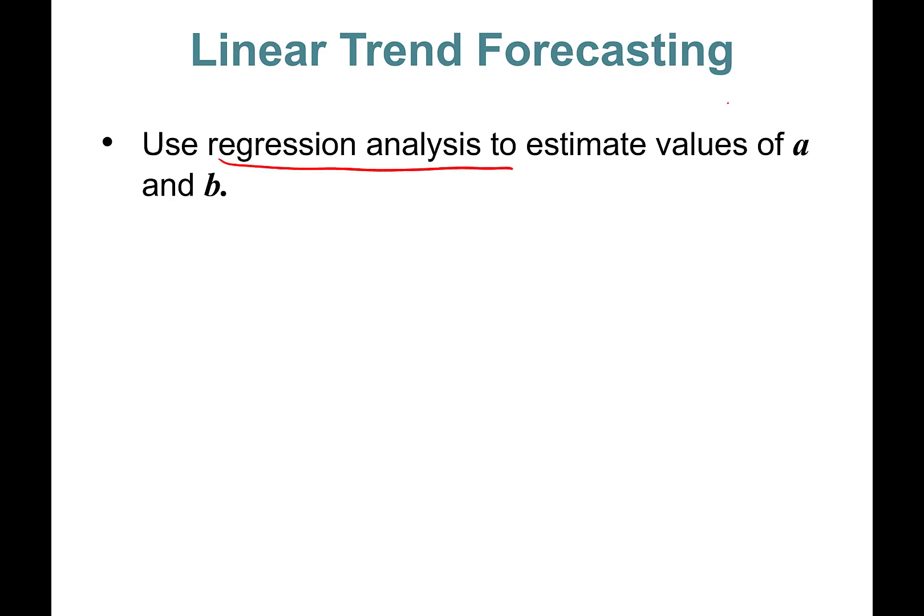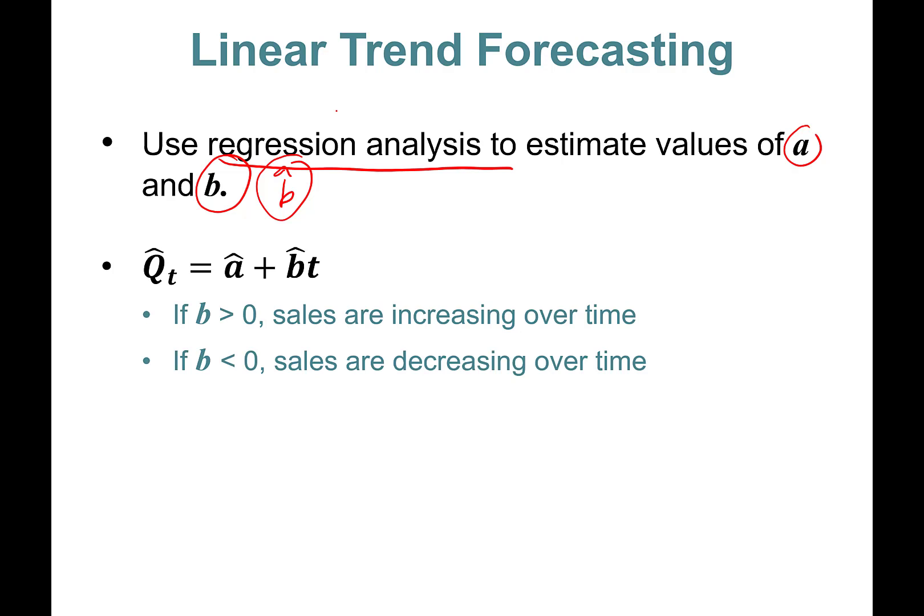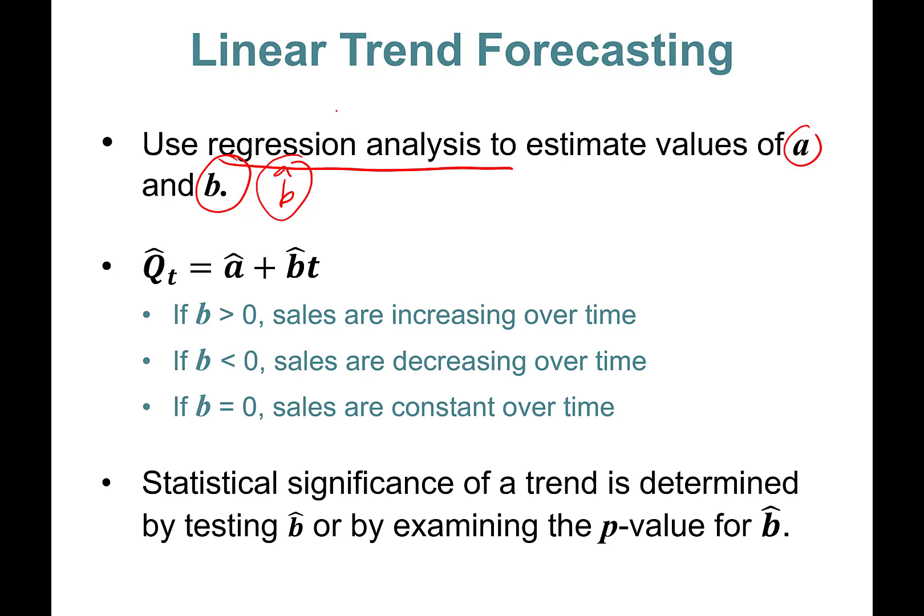You're going to use regression analysis to estimate values of a and B. The coefficient estimate B hat will give you that relationship. Q hat, estimated sales, is a function of a hat plus B hat T. If B is positive, sales are increasing over time - that's what we want. If B is negative, sales are decreasing. B equals zero means sales are constant over time.